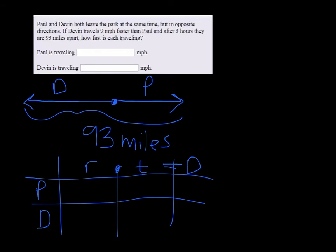We'll start with the easy stuff, we're talking about 3 hours for both of them. So put 3 under T. And the rate, we don't know how fast Paul was going but we know that Devin was 9 miles per hour faster. So we just add 9 miles per hour to Paul's rate.